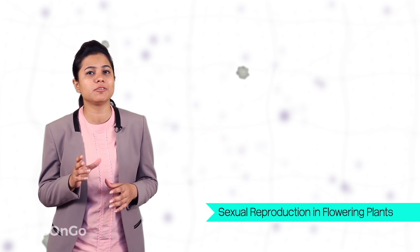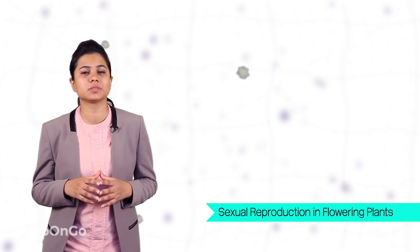Hello everyone. In the last video we understood the importance of sexual reproduction. So let's move on and talk about the process of sexual reproduction in different organisms. First of all, we are going to see the process of sexual reproduction in different flowering plants.